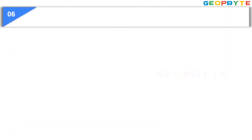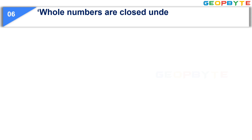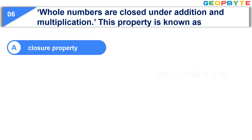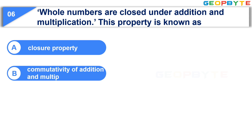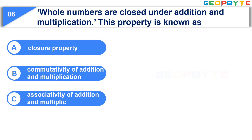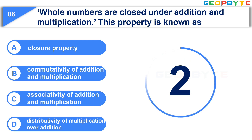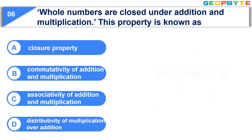The next question is: Whole numbers are closed under addition and multiplication. This property is known as. Option A: Closure property. Option B: Commutativity of addition and multiplication. Option C: Associativity of addition and multiplication. Option D: Distribution of addition and multiplication. Your time starts now. Your time is up and the correct answer is Option A, closure property.